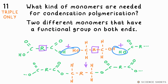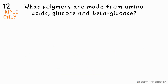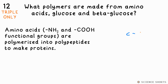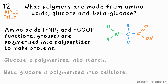Water is kicked out, hence condensation polymerization. What polymers are made from amino acids, glucose, and beta-glucose? Amino acids contain an amino functional group (NH2) and a carboxyl group (COOH); they can be polymerized into polypeptides, which are then used to make proteins. Glucose is made into starch, and beta-glucose is used to make cellulose.